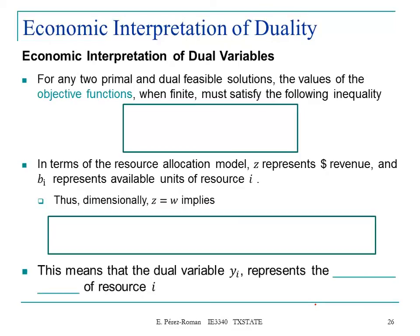The economic interpretation of the dual variables. For any two primal and dual feasible solutions, the value of the objective functions, when finite, must satisfy the following inequality. Using the same notation, z equals the summation of j equals 1 up to n, cj xj.